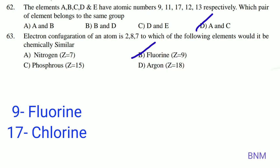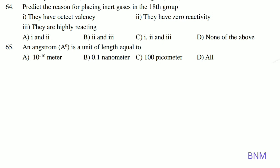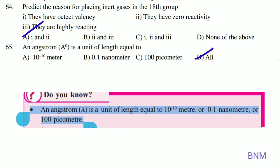The reason for placing noble gases in the 18th group: they have octet valency, with 8 electrons. They have zero reactivity — this is the right statement. The statement that they are highly reactive is wrong. Next, an Angstrom is a unit of length equal to 10⁻¹⁰ meters, or 0.1 nanometer, or 100 picometers — all of the above — option D.